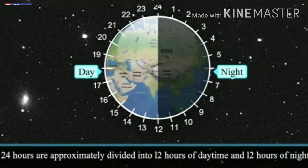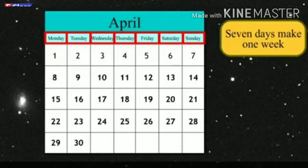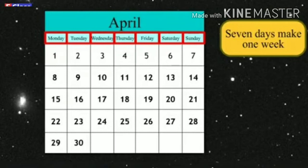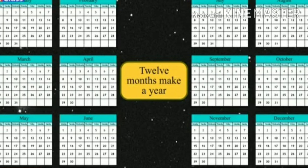24 hours makes one day. Seven days make one week. Four weeks make one month. 12 months make one year. One year is followed by another, and when a hundred years go by, a century is completed. Such a method of dividing time is known as a calendar system. In the next lecture we will study about the common era.